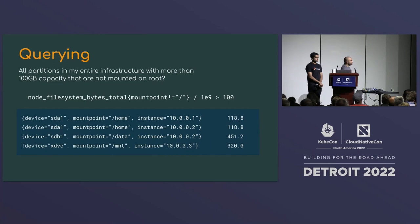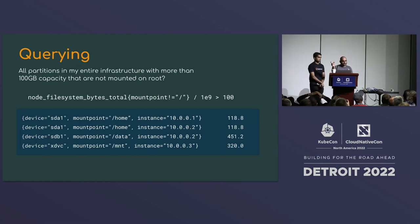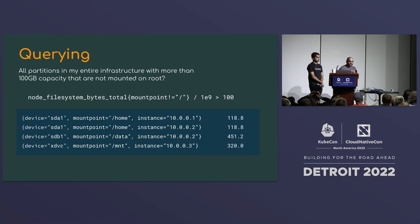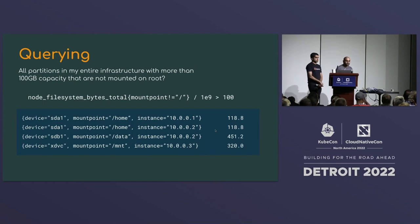Here's an example: selecting all partitions over 100 GB not mounted on root. You take the metric node_filesystem_bytes_total, filter with mount point not equal to slash, divide by 1e9 to convert bytes to gigabytes, and filter for greater than 100. The result gives you a list of time series matching that condition — for instance, this mount point is using 118 GB.